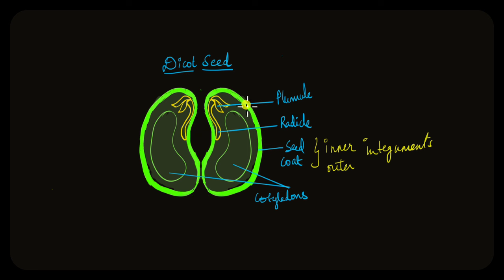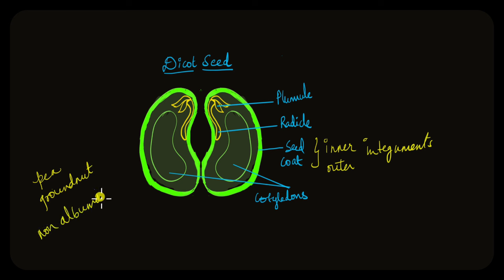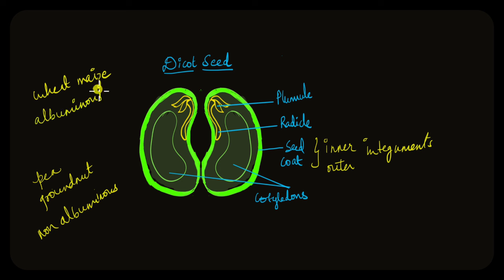When seeds are formed, the endosperm may be completely consumed, as in the cases of pea and groundnut — such plants are called non-albuminous plants. In plants like wheat and maize, some endosperm still remains after the seed has fully developed — such plants are called albuminous plants. In plants like pepper, even the nucellus is persistent after the seed has finished developing. The nucellus, which provides nutrition to the embryo sac, is in such cases called perisperm.